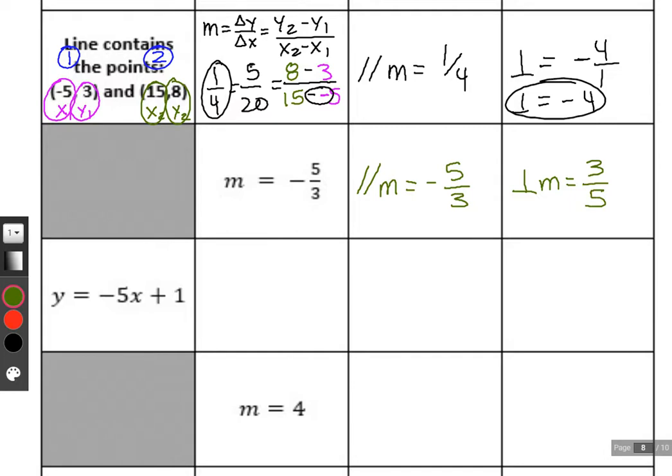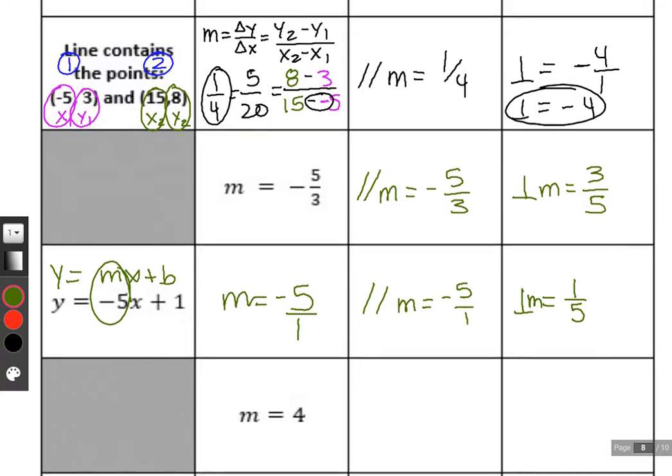Starting over, we have y equals negative five x plus one. Remember, this is y equals mx plus b. So the slope is given to be in the m position, the coefficient of x. And so m, in this case, is just minus five. It might be helpful to think of this as negative five over one. The parallel slope is going to be the same, negative five over one. The perpendicular slope changes the sign from negative to positive and then we flip it to one-fifth. Let's get to the good stuff.